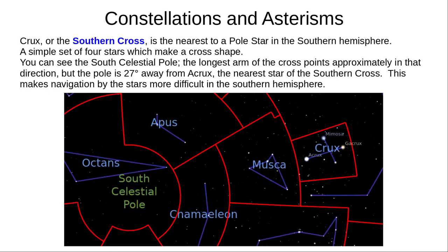Crux, or the Southern Cross, is a set of four stars that make a cross shape. There is no Southern Pole star — this is generally the best alternative, but it's 27 degrees away from the South Celestial Pole, making astronomical navigation harder in the Southern Hemisphere than in the North. The brightest and most southerly star is Acrux. Note how this image shows that lines of equal right ascension form concentric circles around the Celestial Poles, and lines of equal declination radiate away from the Celestial Poles.